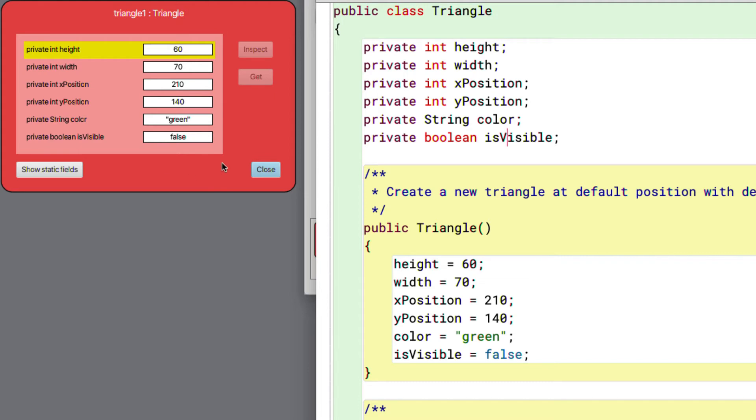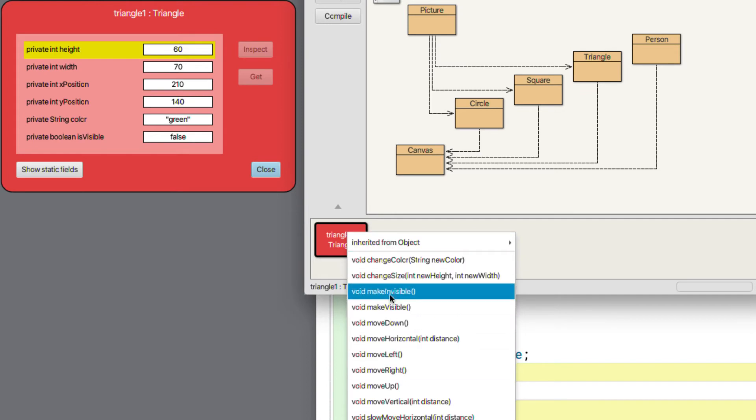And that causes the particular methods of the object to pop up in this list here.